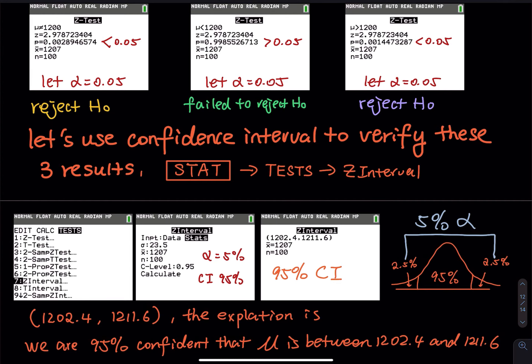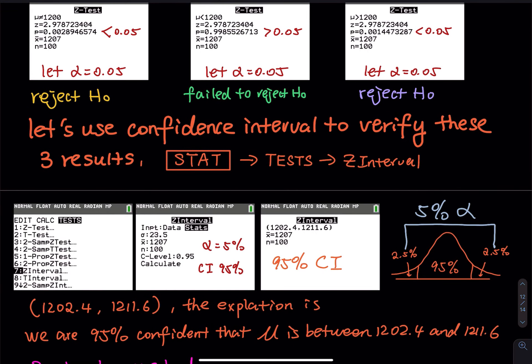So you have the confidence interval. In the previous lesson I showed you how to explain it — those two numbers mean we are 95% confident that the true mean is between those two numbers. That's the explanation for each confidence interval. But I haven't checked my work yet — I haven't done any verification. This sentence is for explanation — you explain what those two numbers mean.